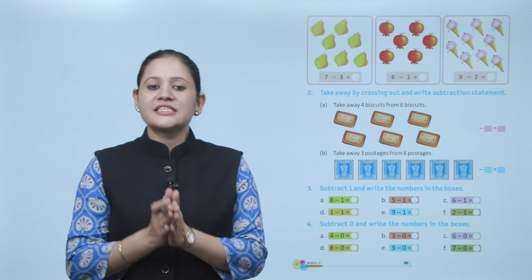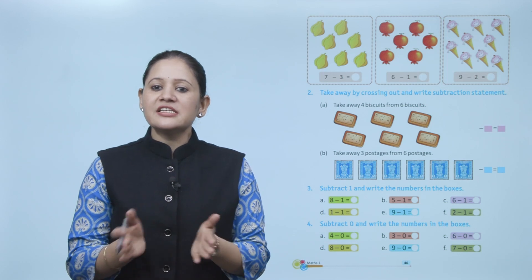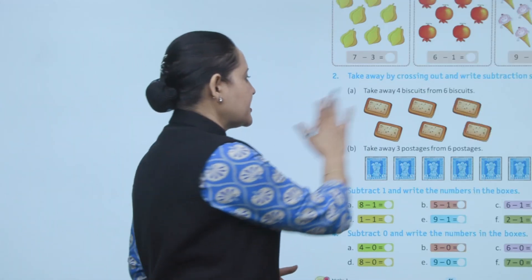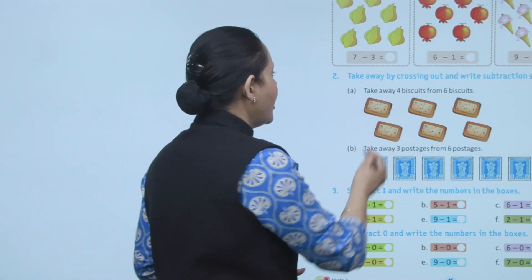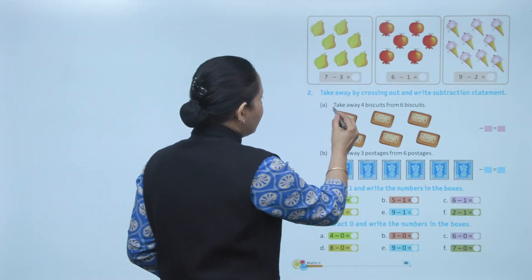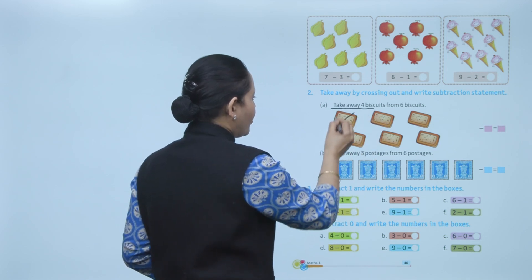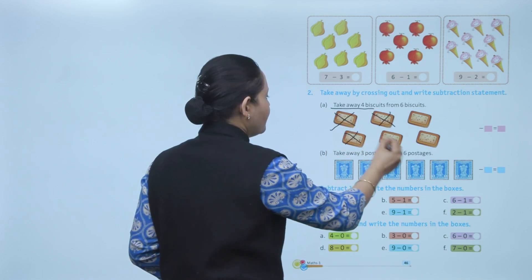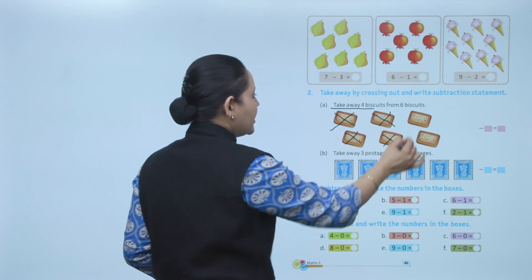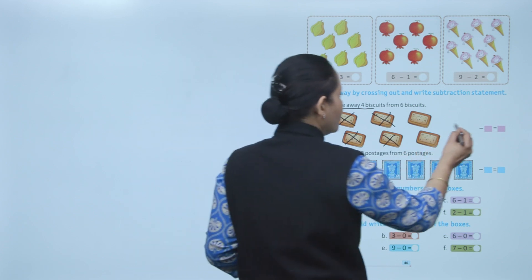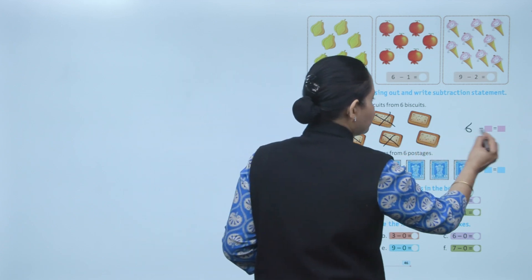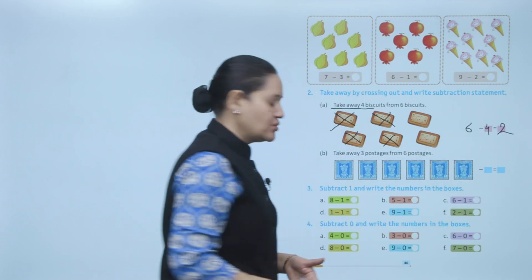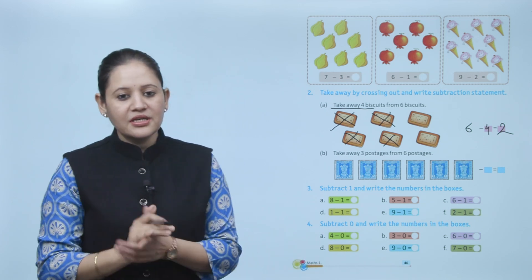Next, take away by crossing out and write the subtraction statement. Here total 6 baskets, take away 4. So 6 minus 4 equals 2. Clear.